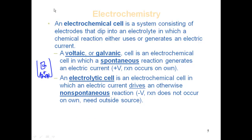An electrolytic cell is an electrochemical cell in which electric current drives an otherwise non-spontaneous reaction — there's a negative voltage and I have to put energy into the system. For example, placing a piece of silver metal in a copper 2+ solution: nothing will happen on its own. However, if I put voltage into that system, I can cause the reaction to happen. That's an electrolytic cell — it has a negative voltage.